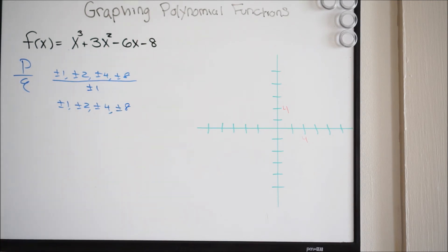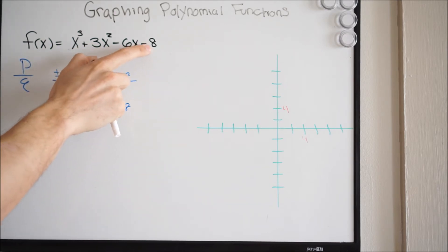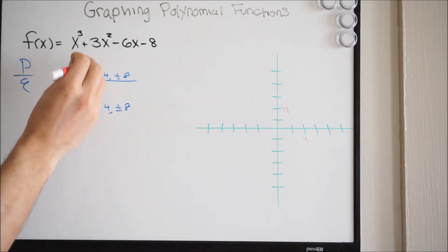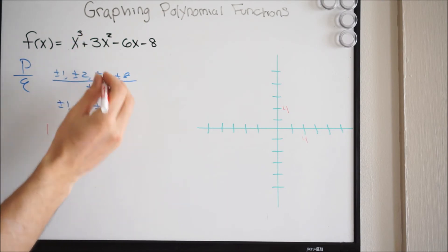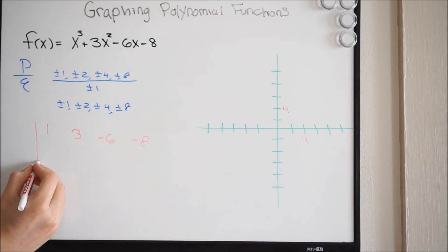Remember when we're using the rational root theorem, we're going to have to use synthetic division. So we look at our function — did we skip any terms? It looks like we didn't, right? We went from x cubed to x squared to x to our constant. Remember, if you skip a term, you have to put zeros in for those coefficients of the missing terms. So in this case, we can just go ahead and bring down the coefficients. So we're bringing down the 1, the 3, the negative 6, and then the negative 8. And then we're going to set up synthetic division.